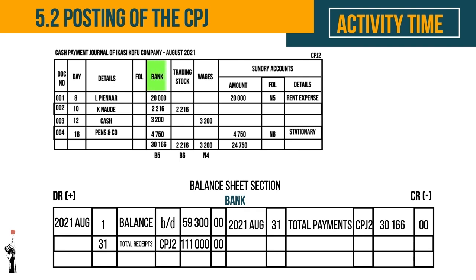The first account is bank. Bank is a current asset and it is increasing on the debit side. It is a column total, so 30,166 rand is posted at the end of the month on the credit side, because it is an asset that decreases — money flows out of the business. The 30,166 rand is all the money that the business paid in August, so you'll use the end of the month as the date in the general ledger T-account.